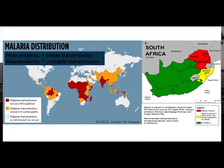It's important to differentiate between holoendemic areas and mesoendemic areas. Holoendemic areas, depicted in red on the world map, are areas where there's stable transmission, meaning constant exposure to the malaria parasite, where mesoendemic areas have unstable transmission, meaning there are seasons of malaria, or the malaria parasite is not that common.